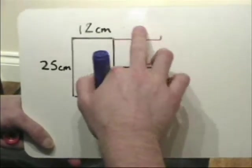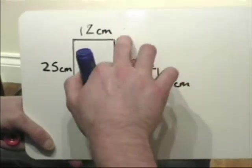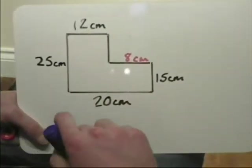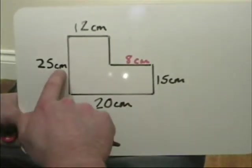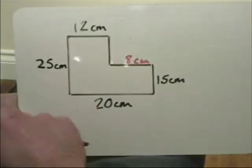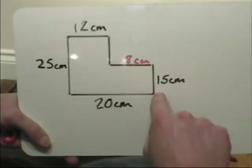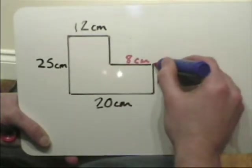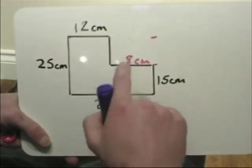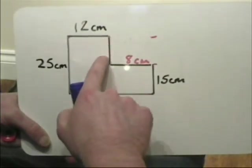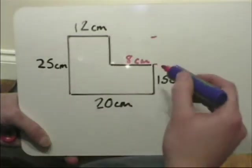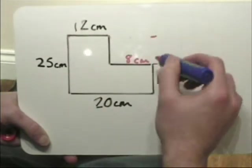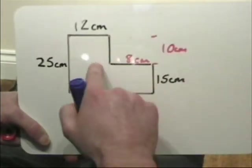To work out this line here, I do a similar thing, but I'm going to use this measurement here, 25 centimeters, and this measurement here of 15 centimeters. The difference between there and there will give me this missing length here. And I know that the difference between 15 and 25 is 10 centimeters, so this must be 10 centimeters.